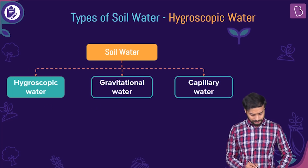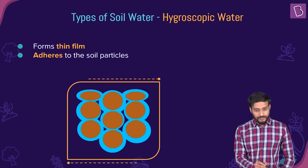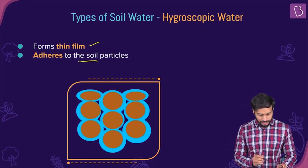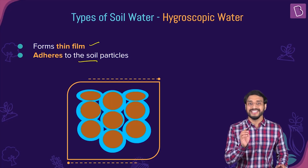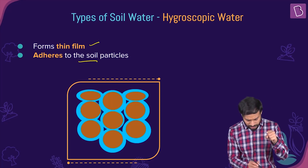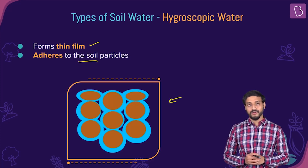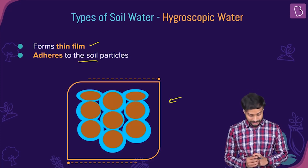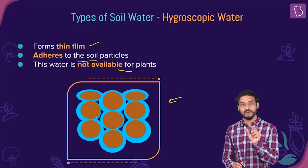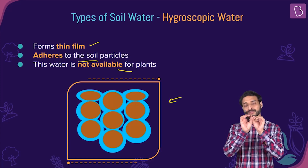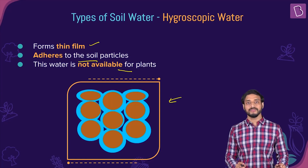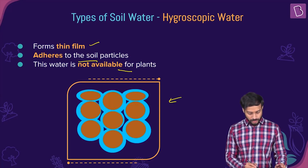Let's understand these types in detail. First, hygroscopic water — it forms a thin film and it adheres to the soil particles, forming a thin film around them. But the unfortunate part is that this water is not available for the plants. So hygroscopic water is the water which adheres to the soil particles, forms a thin film around them, and is not available for the plants.